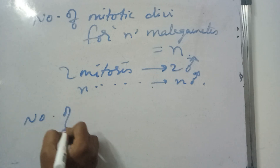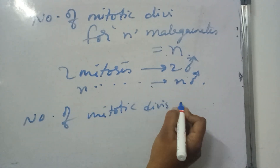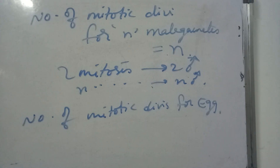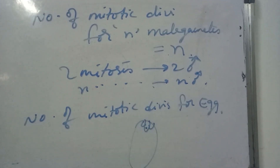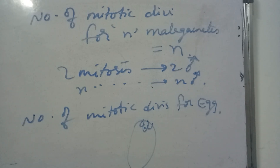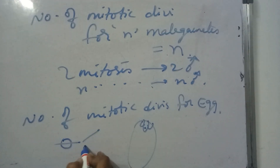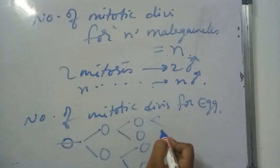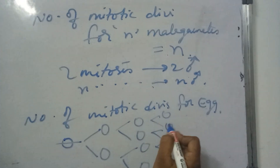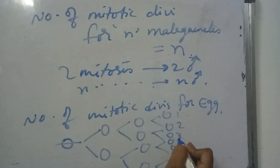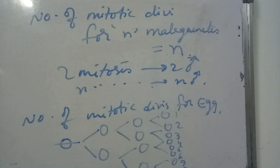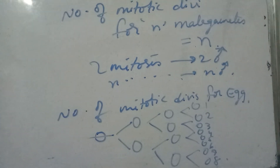Coming to number of mitotic divisions for formation of an egg cell — for one egg cell, one embryo sac means one egg cell will be formed in each embryo sac. One functional megaspore will be formed due to meiosis. This functional megaspore will divide through one generation, two generations, three generations, resulting in eight nuclei.